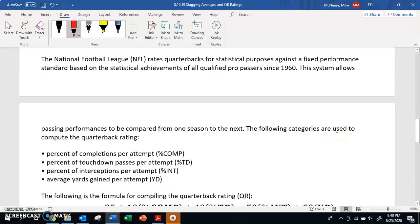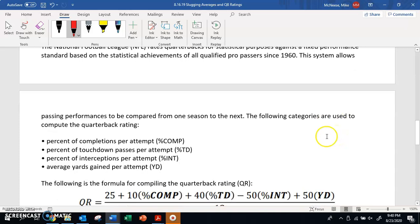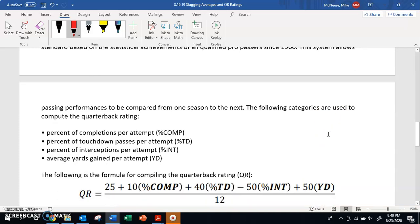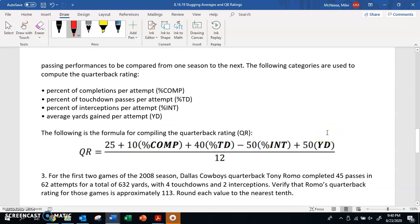The next one I want to talk about is NFL. The NFL rates quarterbacks for stat purposes against a fixed performance standard based on the stat achievements of all qualified pro passers since 1960. The system allows passing performances to be compared from one season to the next. The following categories are used to compute the quarterback rating: percentage of completions per attempt, percentage of touchdown passes per attempt, percentage of interceptions per attempt, and average yards per attempt.